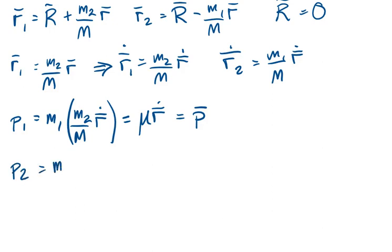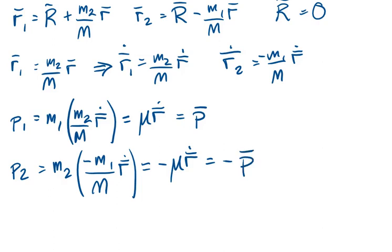P₂ is equal to the mass of particle 2 times its velocity. I'm sorry, that's negative up there. Its velocity is negative compared to the relative velocity. That equals the negative of the reduced mass times the relative velocity of the system, which equals negative P. And that's it.